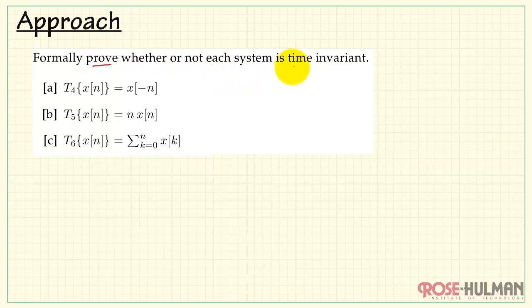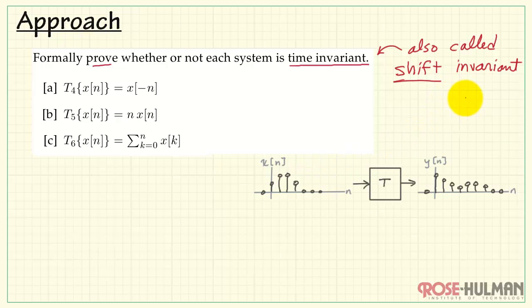Let's take a look at a general approach to prove whether or not each of these three systems is time invariant. When a system is time invariant, this also goes by the alternative name shift invariant, which perhaps is a little bit more descriptive of the concept that we're trying to test.